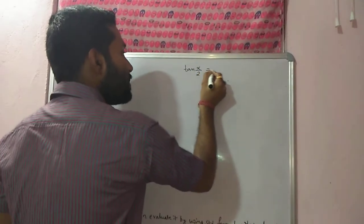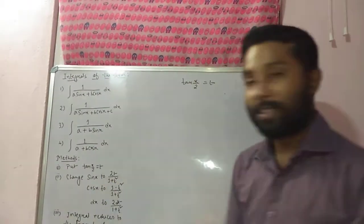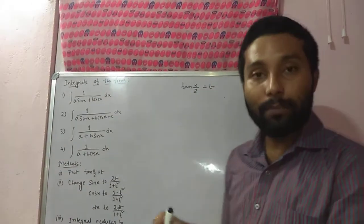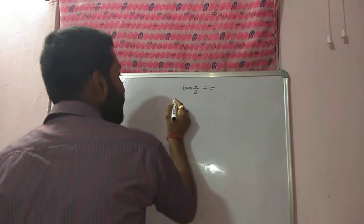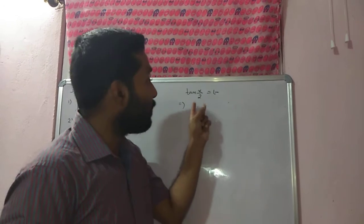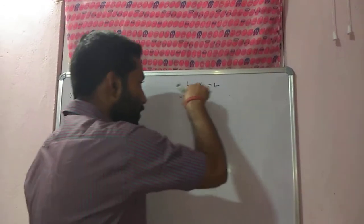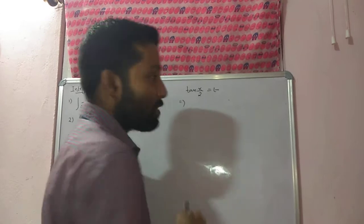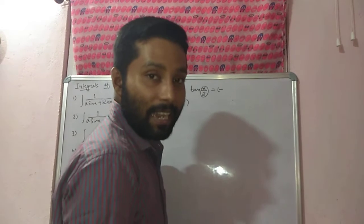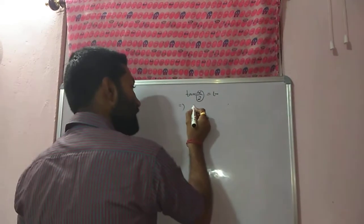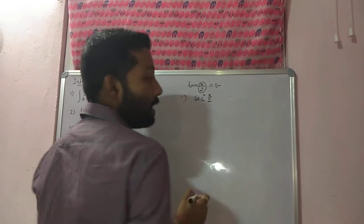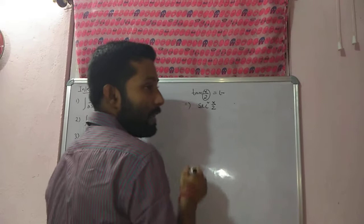If I put tan(x/2) equal to t — which is the first step — that means I am using the substitution method. The rule is: after substituting t, differentiate both sides with respect to x. The differentiation of tan(x/2) uses the chain rule: it is sec²(x/2) · d/dx(x/2), and d/dx(x/2) is 1/2. So sec²(x/2) · (1/2) = dt/dx.